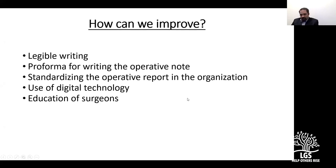How can we improve operative reports? Options include: writing legibly with pictorial diagrams, using printed proforma sheets as in many corporate hospitals that provide spaces for patient details, surgeon details, anesthetist details, and procedure — following a proforma avoids missing information. We should also standardize operative reports across the organization so everyone follows the same format, enabling easier data analysis and quality improvement in the future.